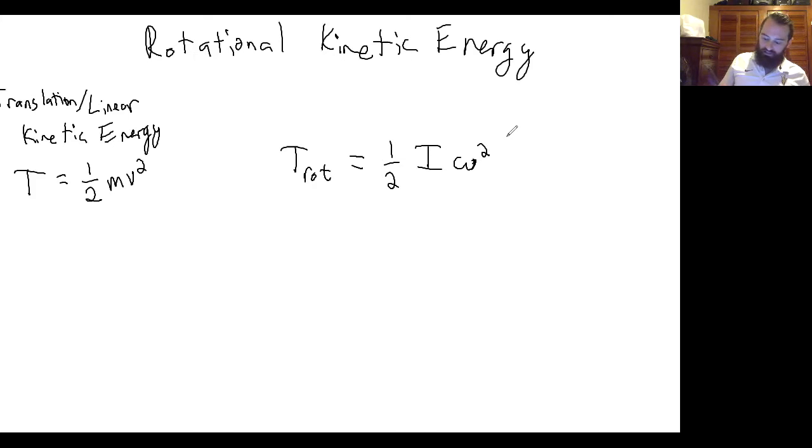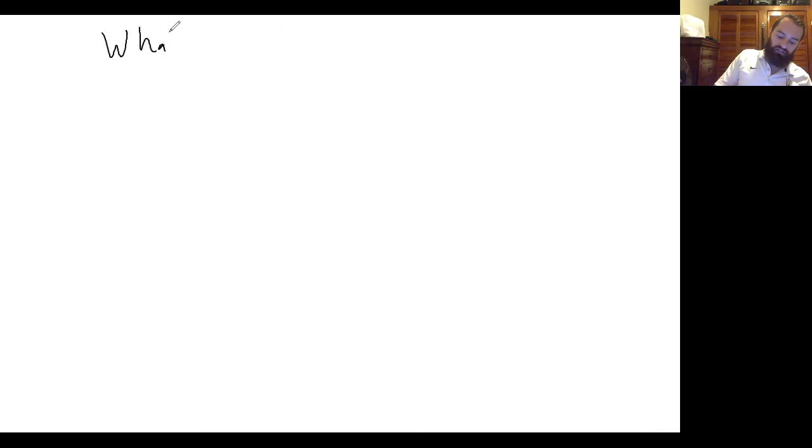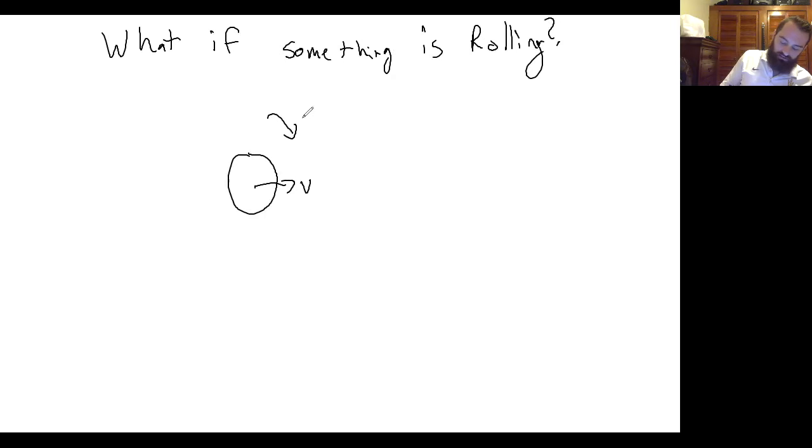So a couple things to think about. What if you had something that's rolling, or what if it's spinning and moving, which is a type of rolling? So rolling I'm talking about like a ball or a cylinder rolling, and you can imagine something that's rolling, it would have some velocity in this direction and some angular velocity that's rotating.